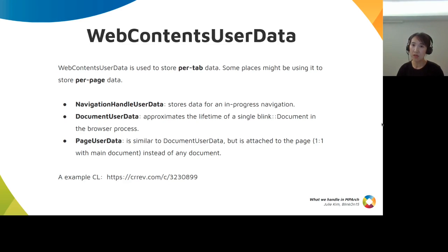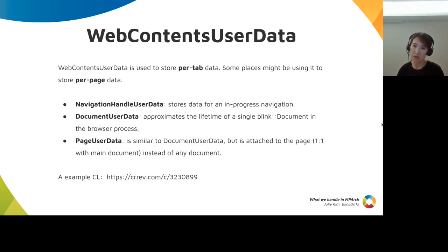We also frequently use web contents user data when we want to store something related to tab data. With NPRs, some places might be using it to store per-page data. There are several options we could choose instead. First, NavigationHandleUserData — it stores data for an in-progress navigation. Second, DocumentUserData — it approximates the lifetime of a single Blink document. Last, PageUserData — it is attached to the page instead of any document.